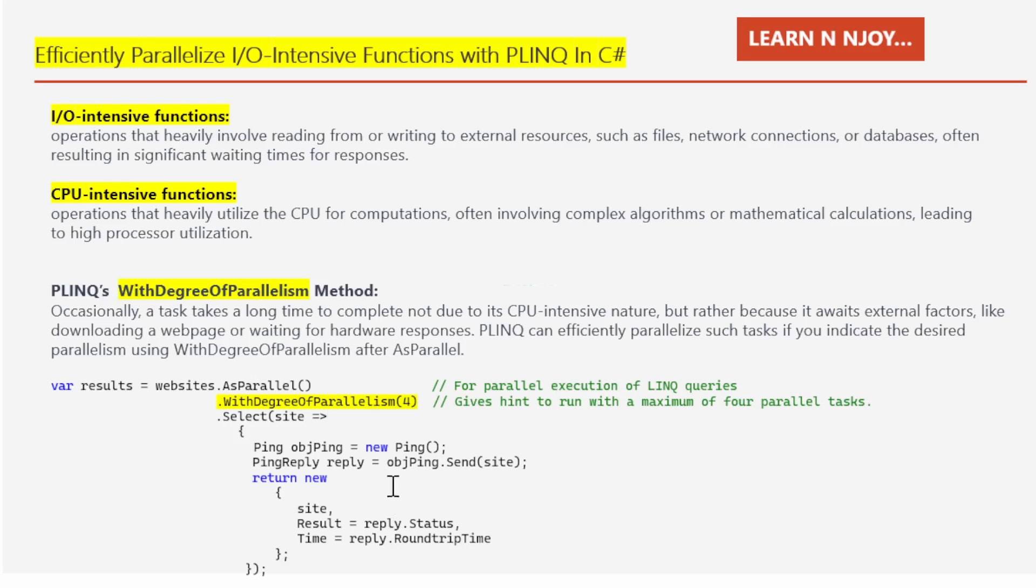That's why the results of the PLINQ query are going to get stored into this results variable. This is how we are going to use WithDegreeOfParallelism. Let's switch to Visual Studio and see all these things in action.